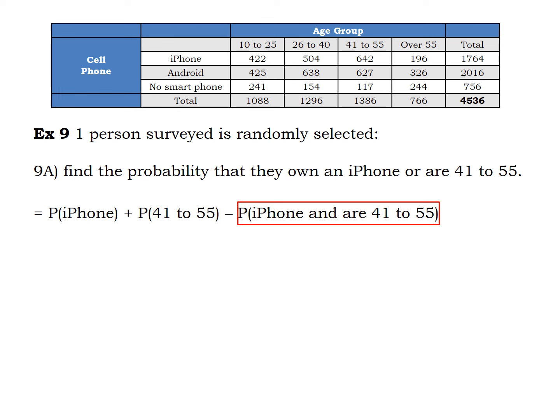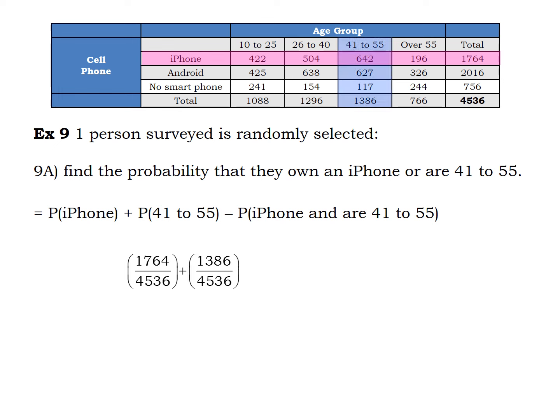Now we have three small probability problems. The probability they own an iPhone is 1764 out of 4536, plus the probability they're 41 to 55, which is 1386 out of 4536, minus the probability that they own an iPhone and are in the 41 to 55 age group. Those 642 have been counted twice, which is why we subtract them. From there it's just arithmetic to simplify.